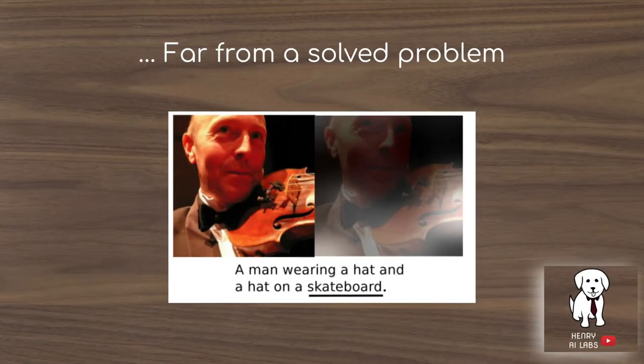Image captioning is really interesting but far from a solved problem in deep learning. This is one example they present in their paper where the model describes a guy with a violin on his chin as a man wearing a hat and a hat on a skateboard. He's wearing two hats.